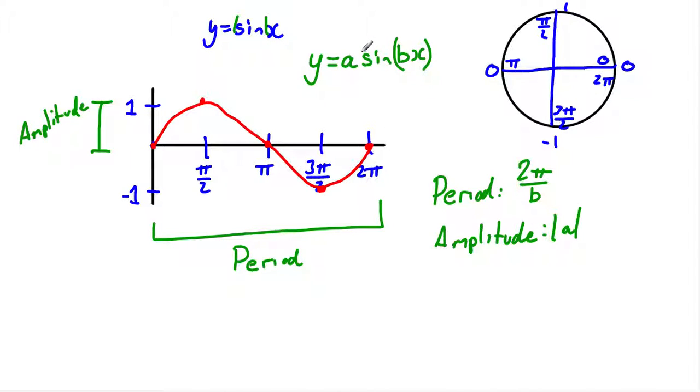Here, this is 1 times sine, so again, A is 1, so the amplitude is 1. So it's pretty cool how that works out, right?